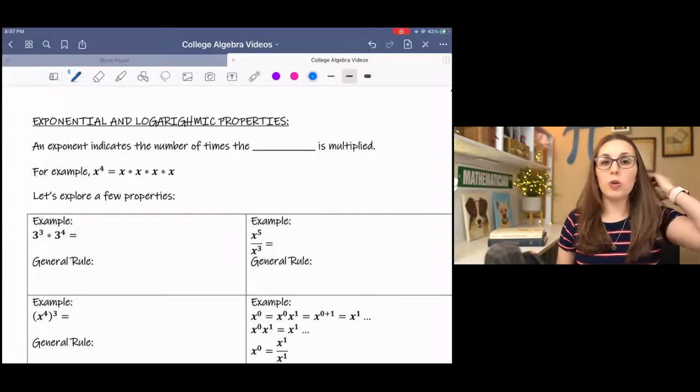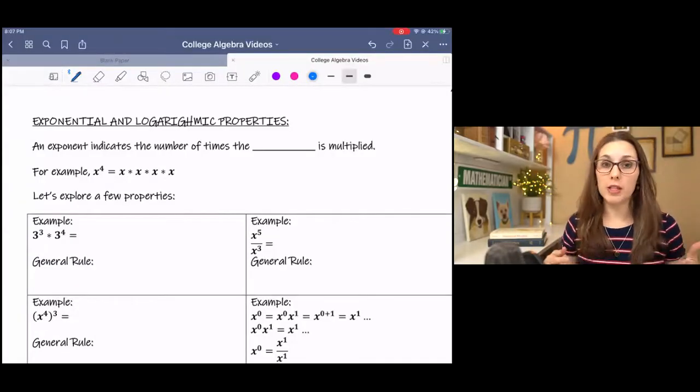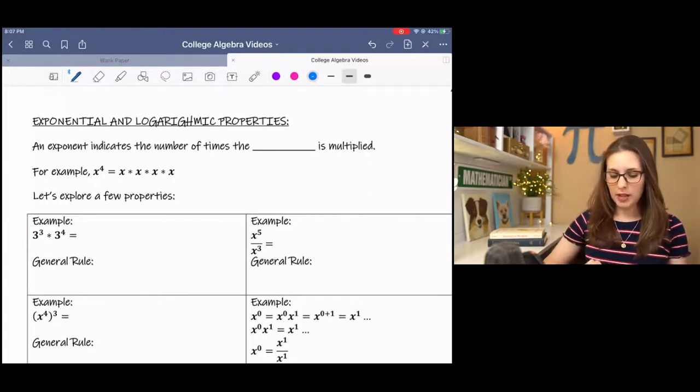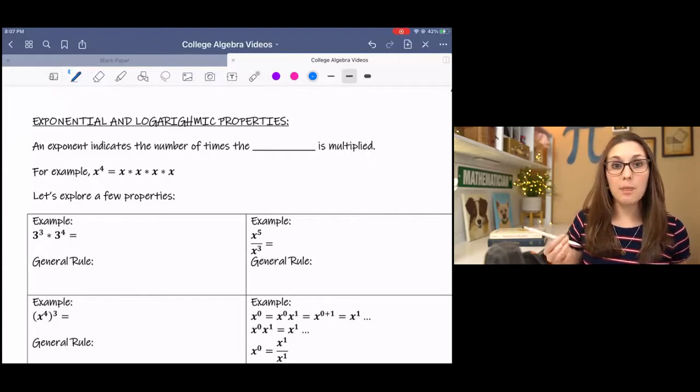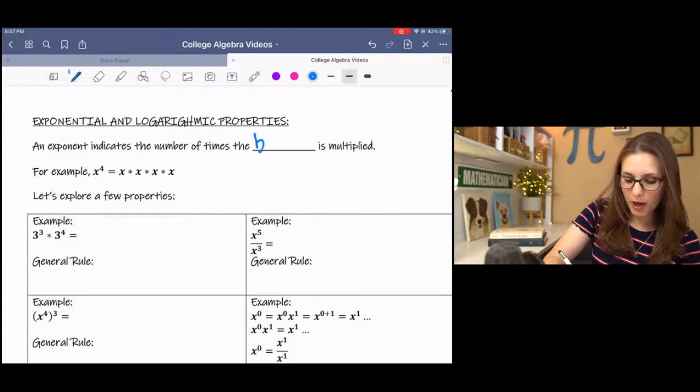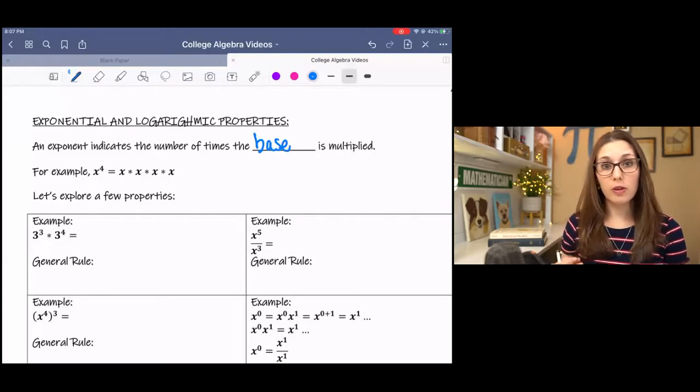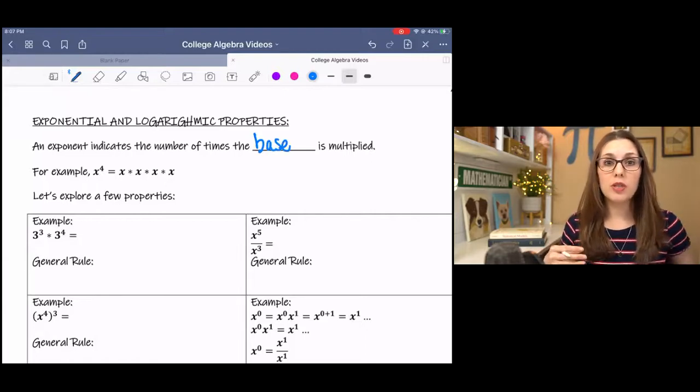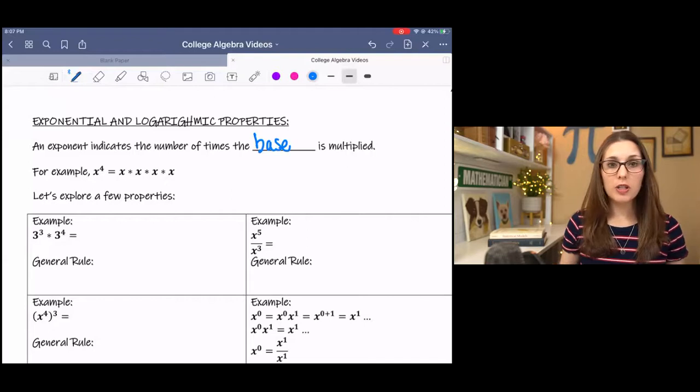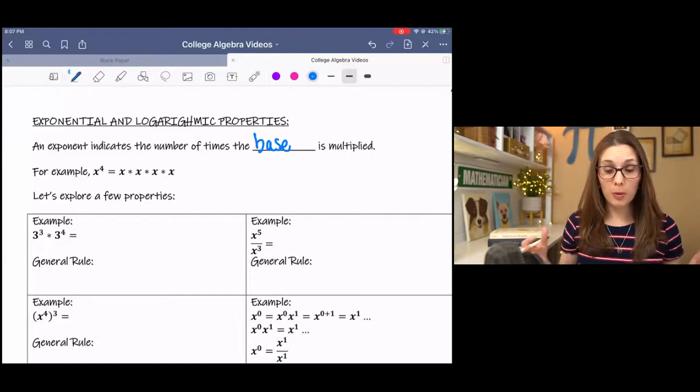If we think back to the definition of an exponent, an exponent indicates the number of times that a base is being multiplied. So exponents are associated with multiplication. For example, x to the fourth, the base is x. x is being multiplied four times. So we're going to use that expansion to help us explore some exponential properties.